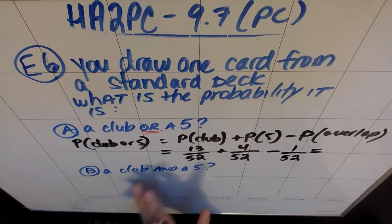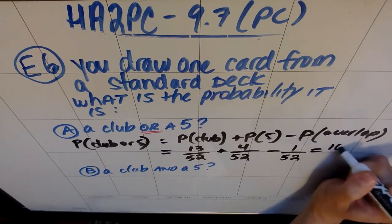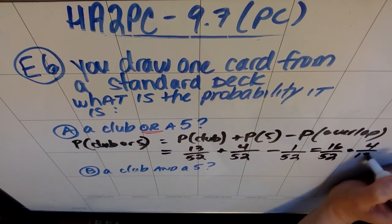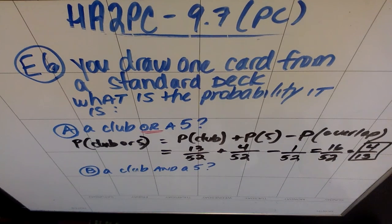So what would end up happening is I'd get 17 minus 1, so that's 16 over 52. And if I cancel a 4 out of that, I get 4 thirteenths. So the probability that I'm going to draw one or the other.